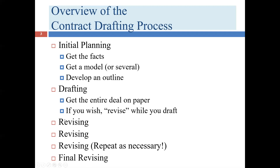I suggest looking for one, possibly two things per pass through the document. If you try to look for everything in one pass, you won't catch it all. For example, if your weakness is singular 'they,' you need a dedicated pass just for that — find every instance of the word 'they' and check whether its antecedent is singular or plural. If singular, change either the 'they' or the antecedent. If plural, you're probably fine.